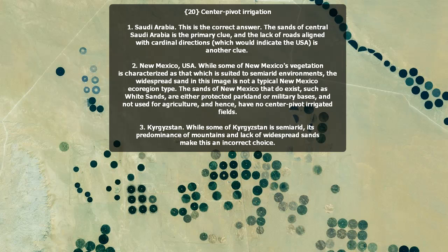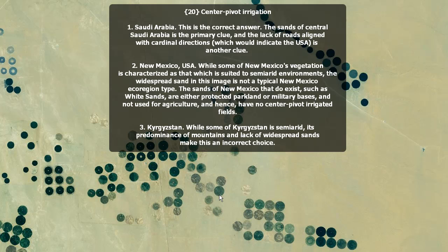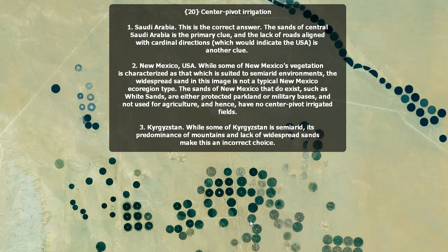Center pivot irrigation — this is a tricky one. It is in Saudi Arabia. The sands of central Saudi Arabia is the primary clue, and the lack of roads aligned with cardinal directions — which would indicate the USA — is another clue. So it can't be New Mexico. Some of New Mexico's vegetation is semi-arid, but it's not completely arid like Saudi Arabia here. Sands of New Mexico do exist, like White Sands, but they're either protected parkland or military bases and not used for agriculture, so they have no center pivot irrigated fields in those sands.